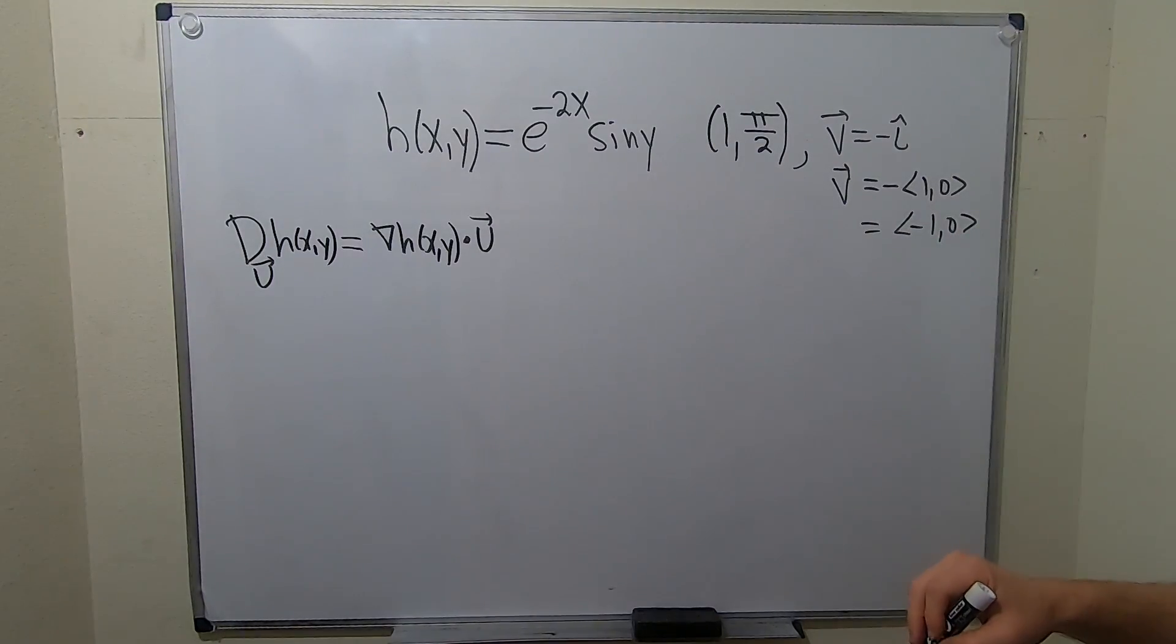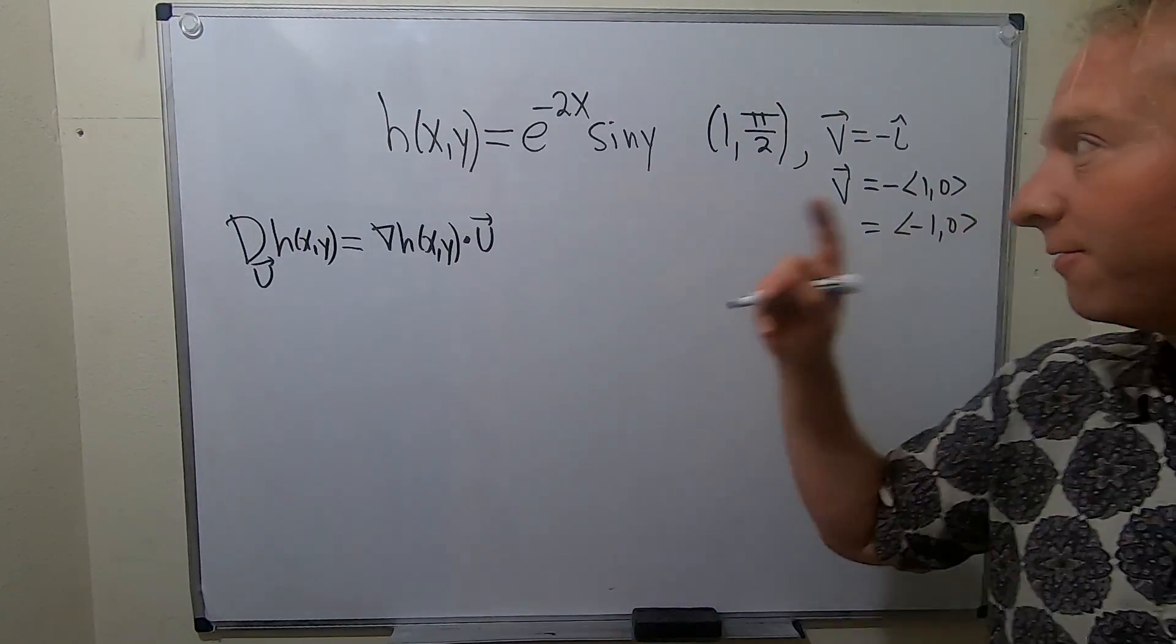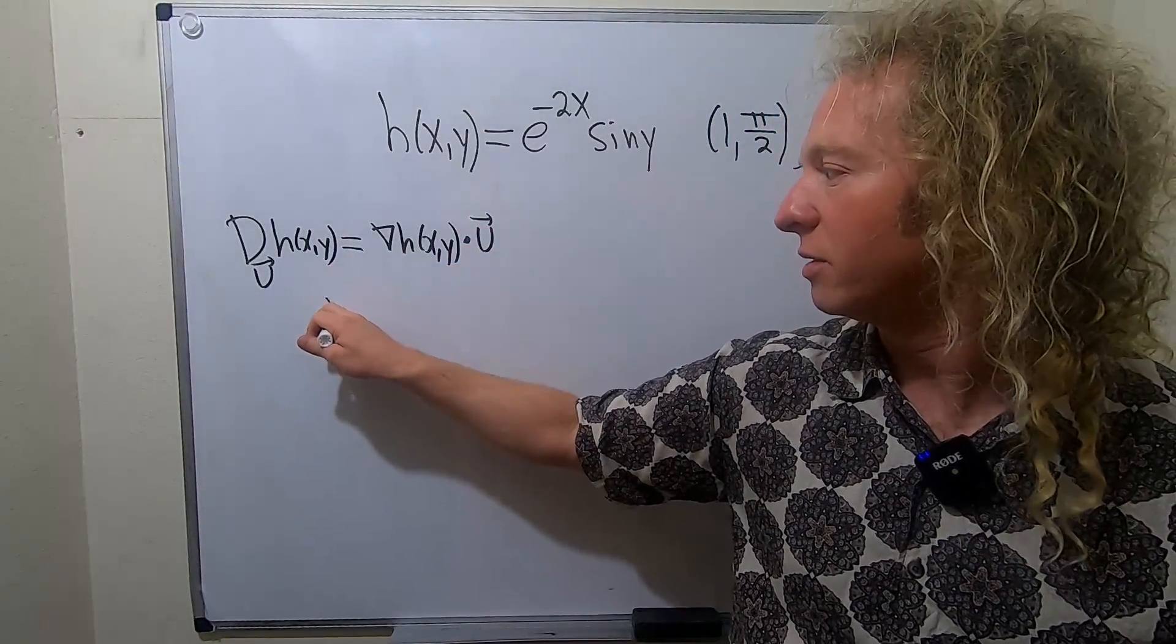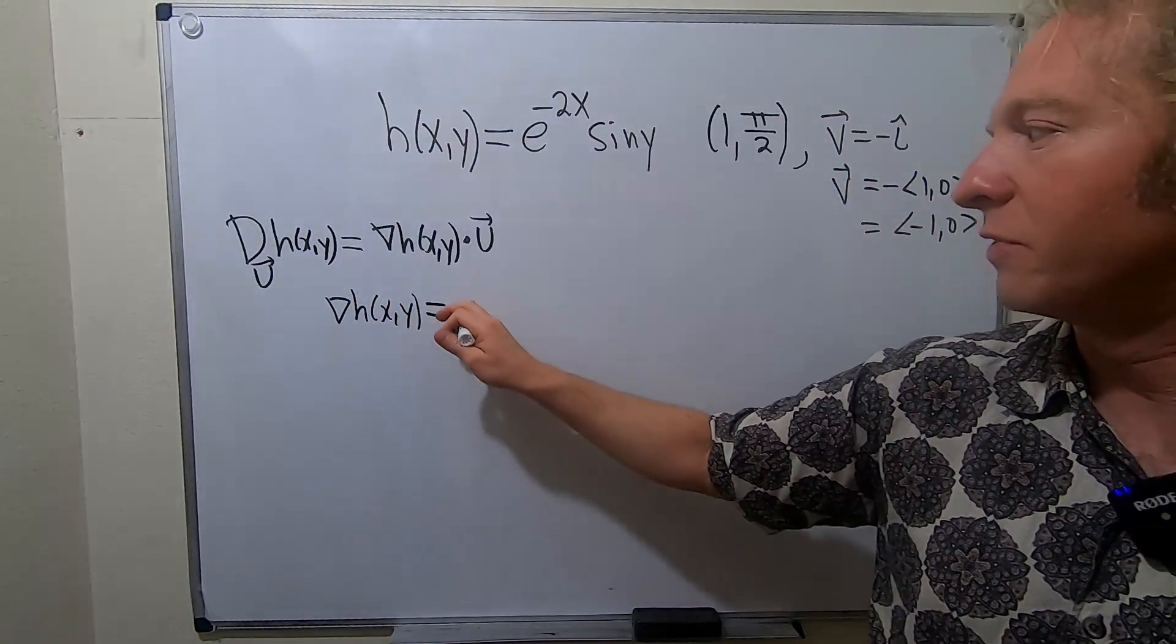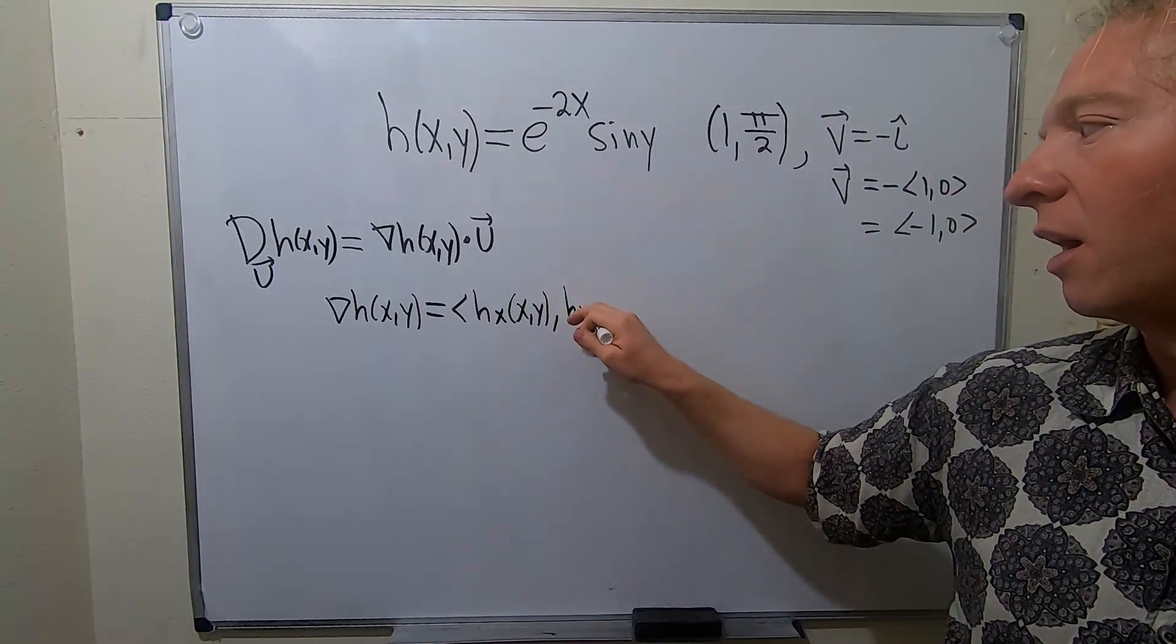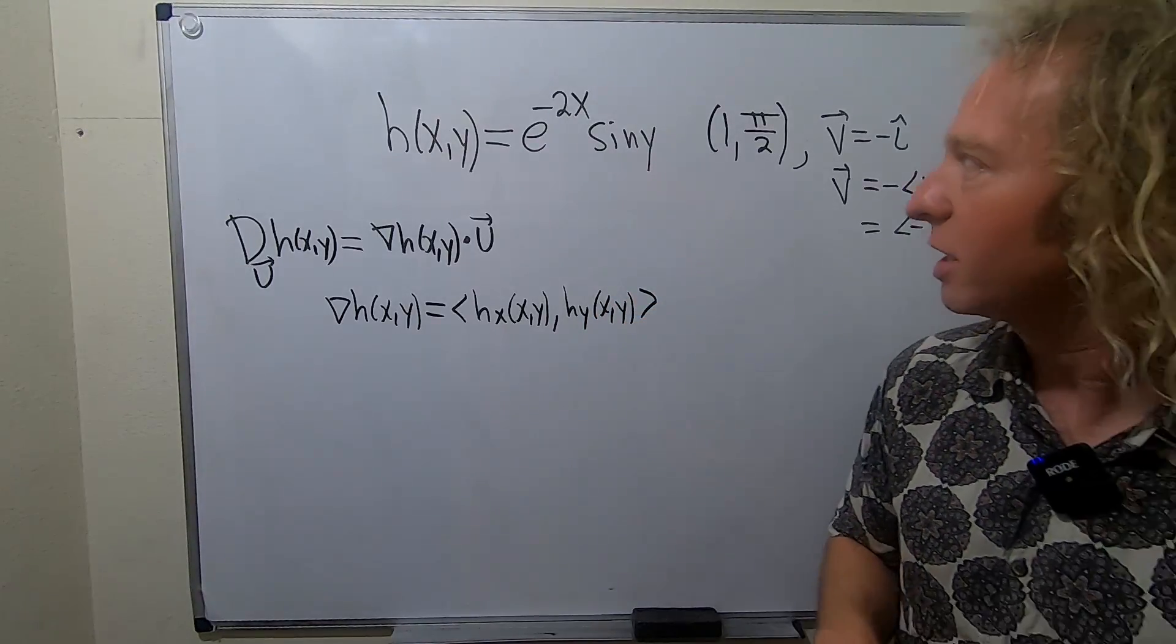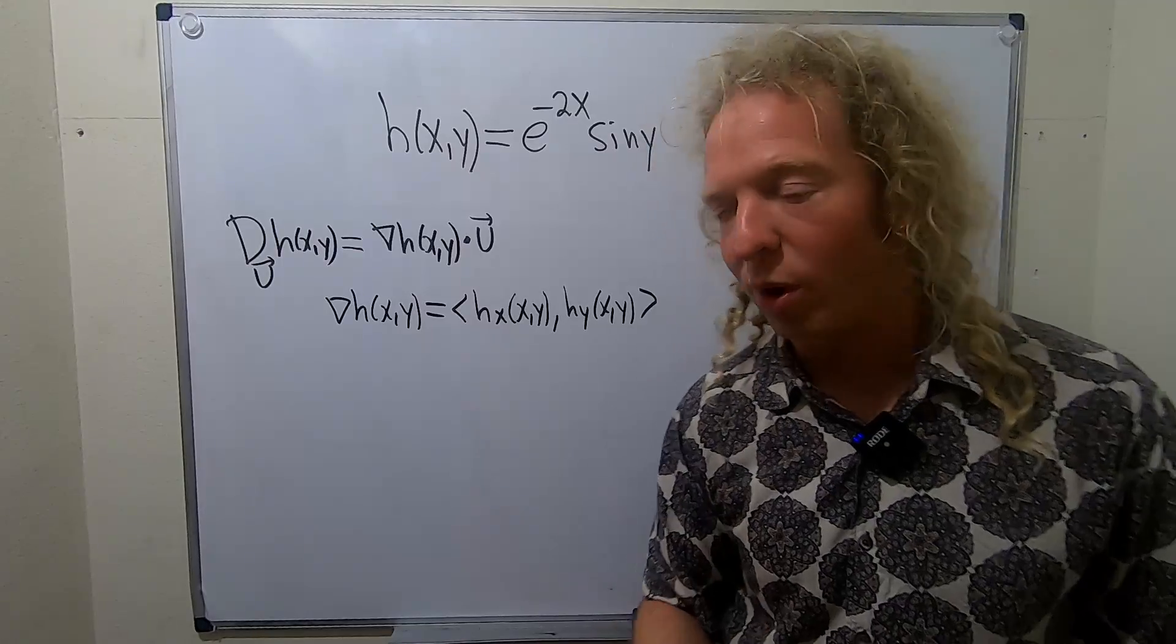So all we have to do is find the gradient, plug in the numbers, take the dot product. So let's find the gradient first. To find the gradient of h, we have to find the partial derivatives. Recall this is hx at xy, hy at xy. So hx is the partial with respect to x, hy is the partial with respect to y.